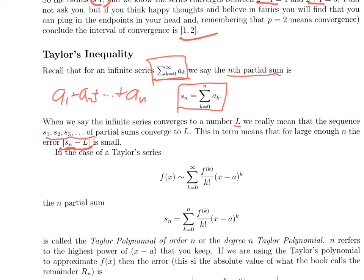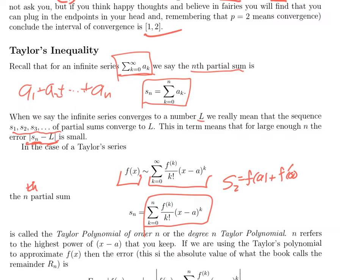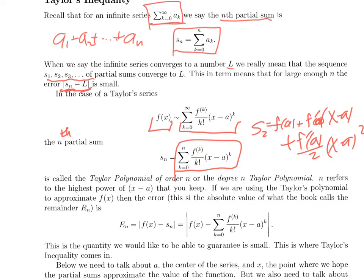What does that say about Taylor series? So in Taylor series, here's the infinite series, here's what we're hoping it approximates. The nth partial sum is just the series truncated at n. So s₂ is f(a) plus f'(a)(x-a) plus f''(a) over 2 times (x-a)². That's one example. Any number you put below s gives you just a polynomial. So that polynomial, sₙ, is called the Taylor polynomial of order n, or the degree n Taylor polynomial. n refers to the highest power of (x-a) that you keep.